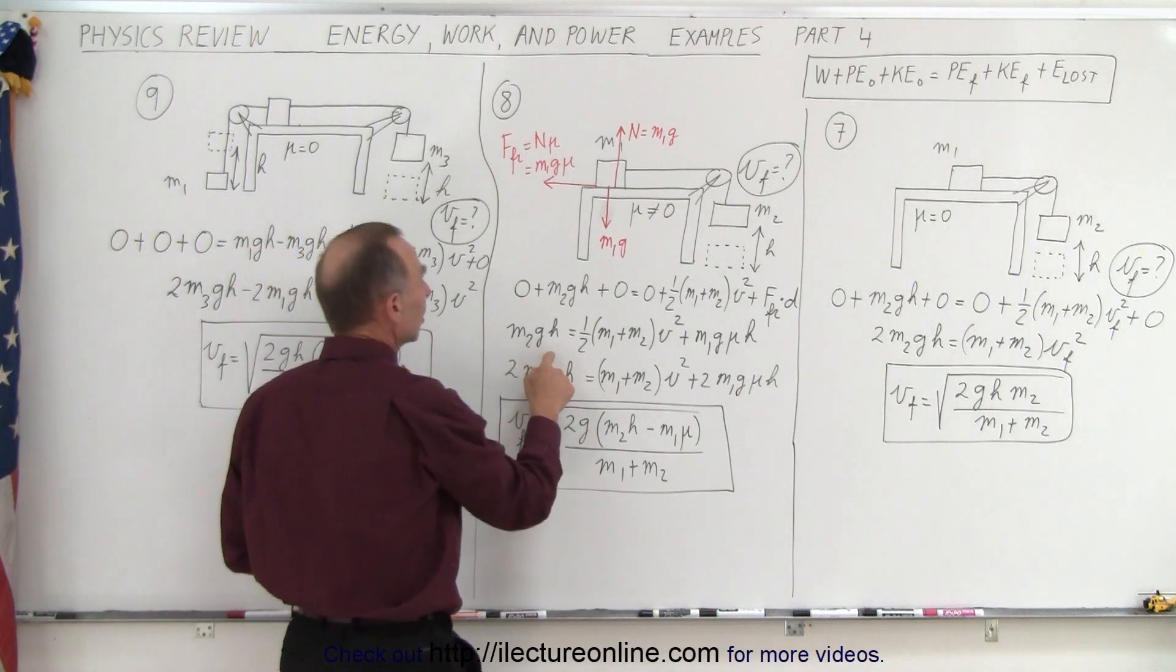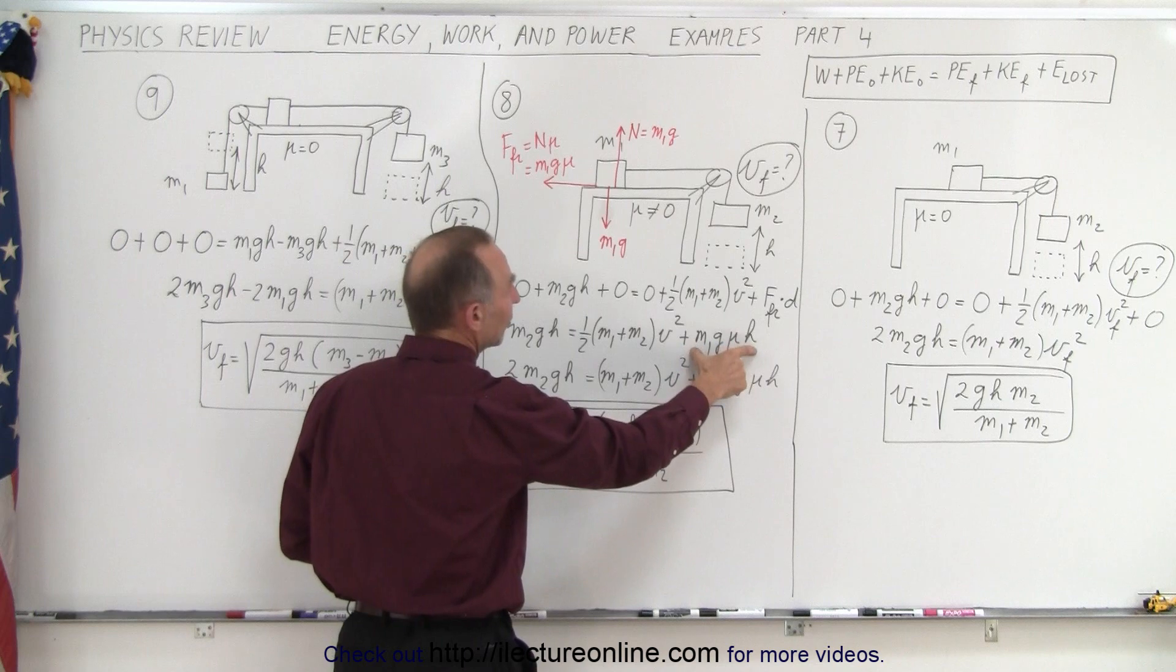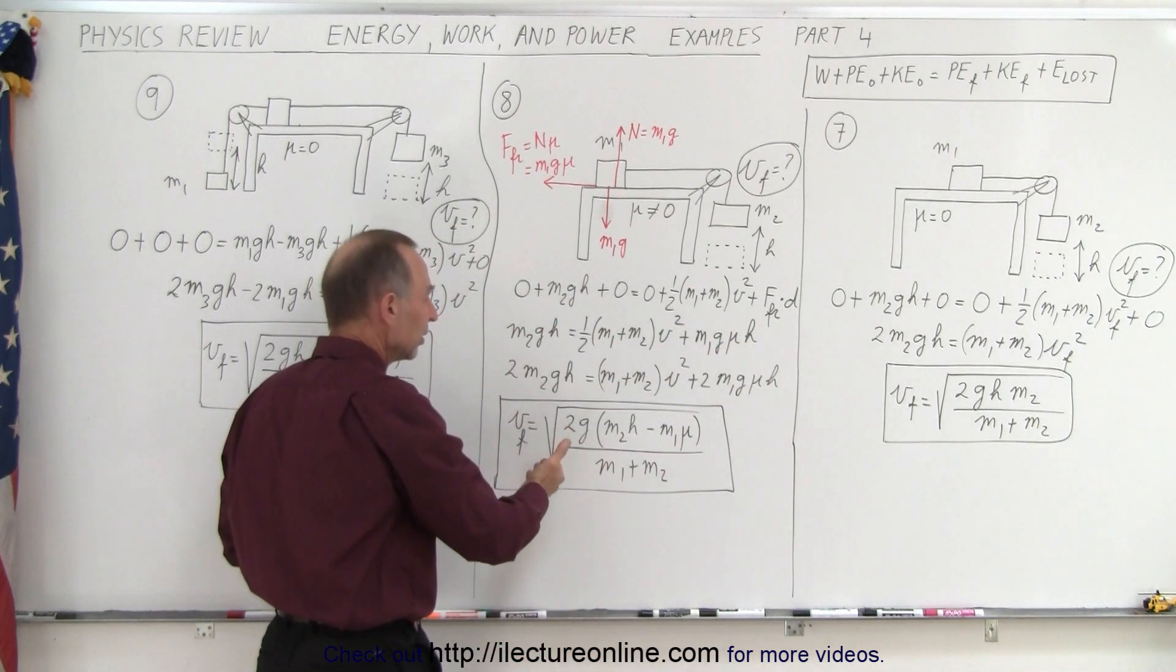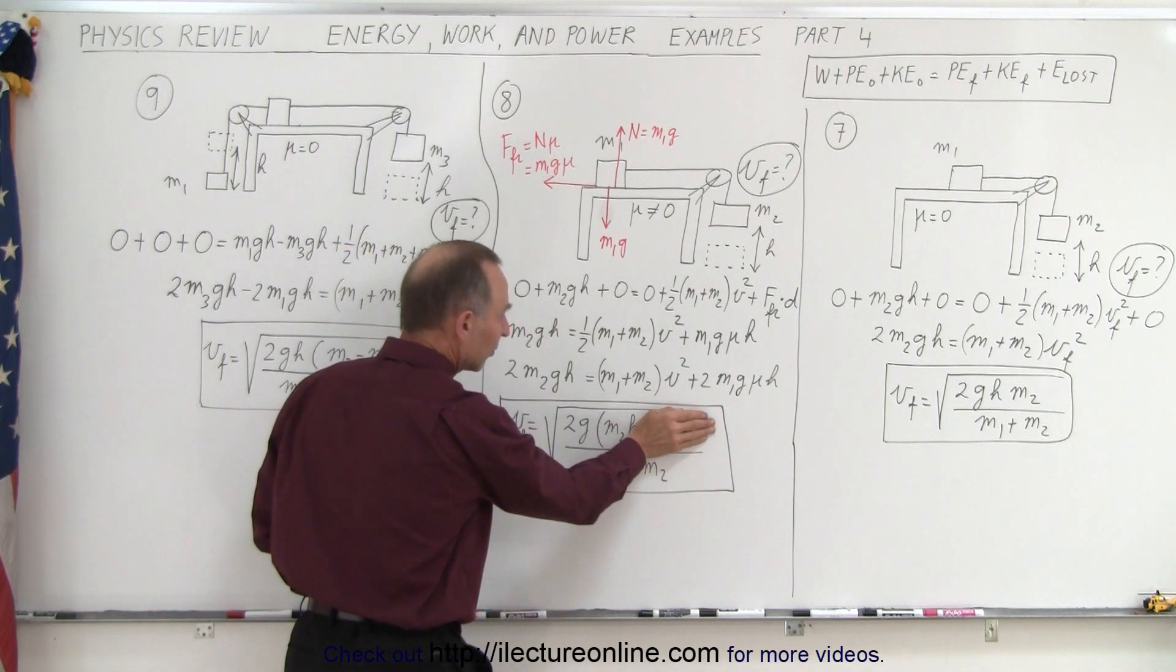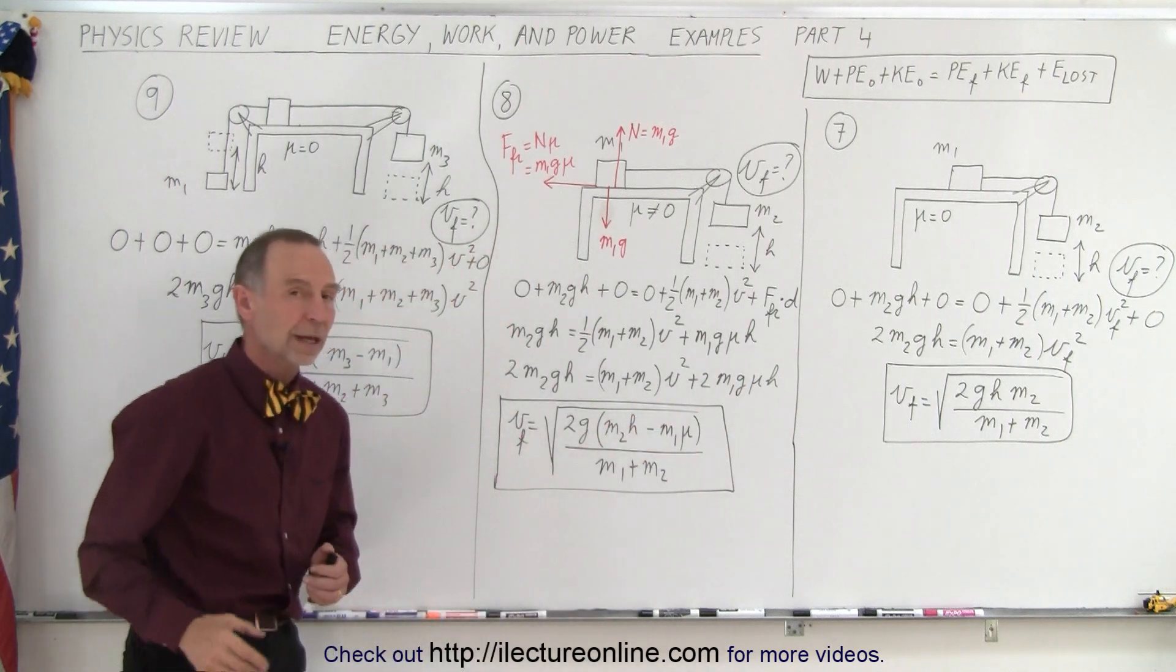So we still have m2gh on the left side, one half (m1 plus m2) v squared on the right side, and then we have this additional energy loss term. When we solve this algebraically for v final we get this—notice that if you get rid of this you end up with the exact same thing as what we had over there. But of course we lost some energy, we have to account for that.